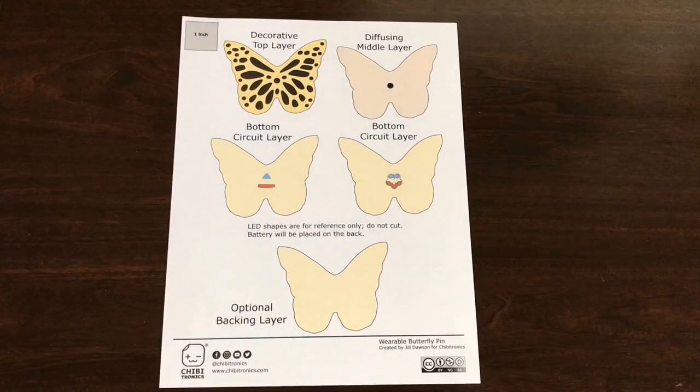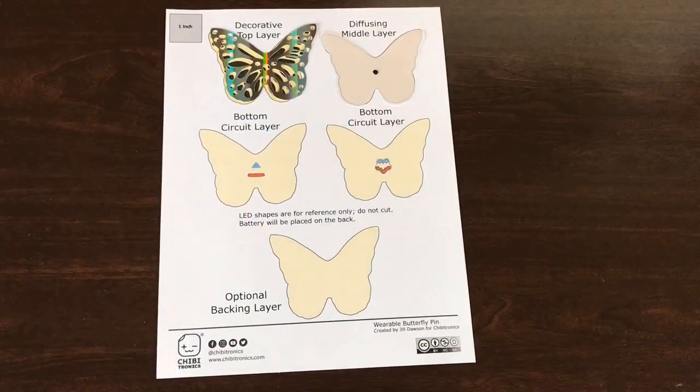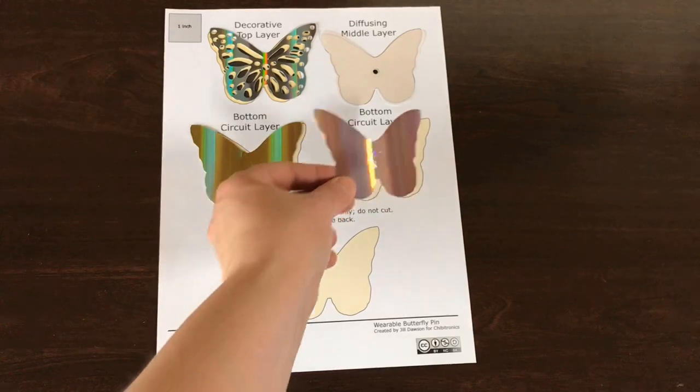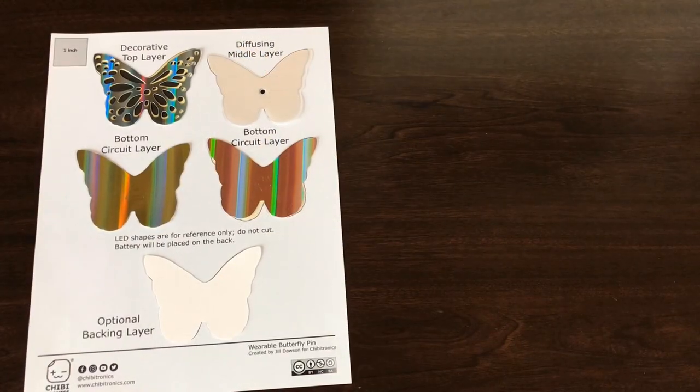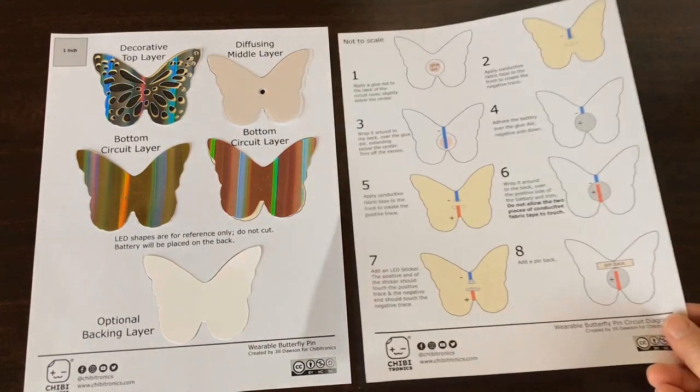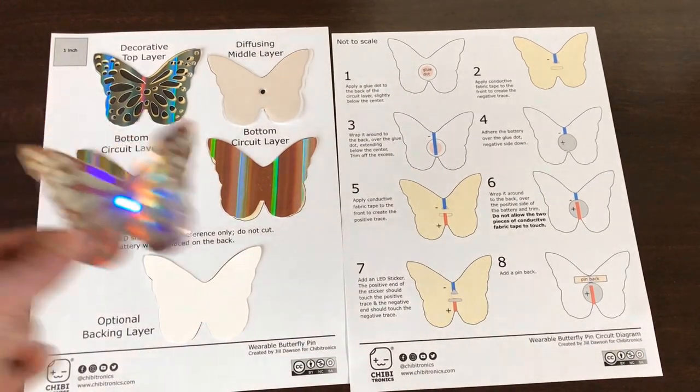To make a wearable butterfly pin, you'll need to cut a minimum of three paper layers. I used iridescent cardstock for the main part of my pin, with translucent vellum in between to help diffuse the light. You can find a link to download my customizable cut file and circuit diagram in the description below.